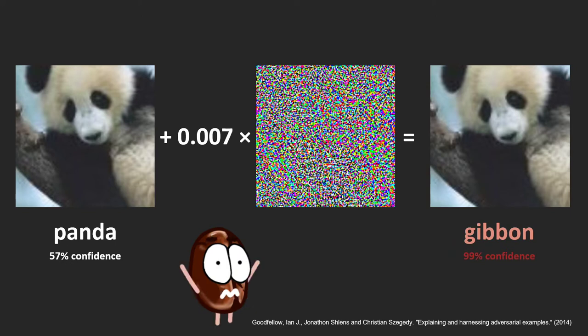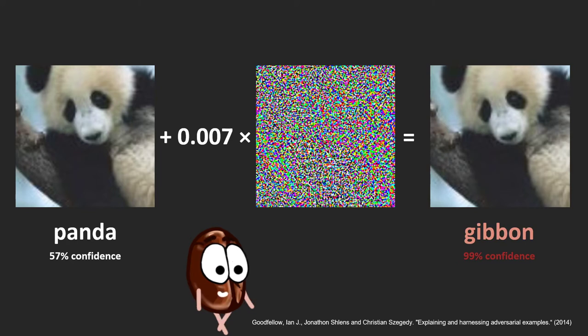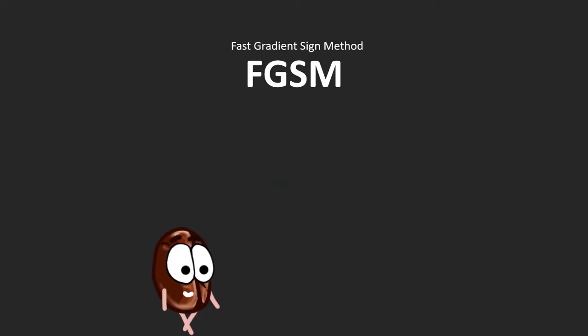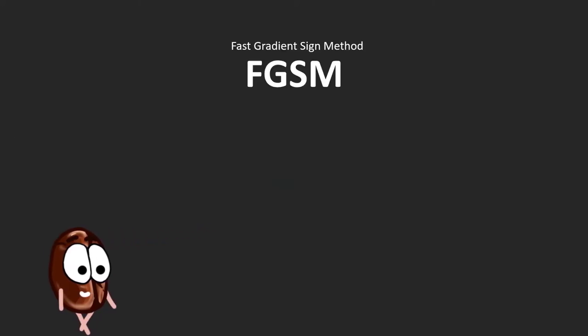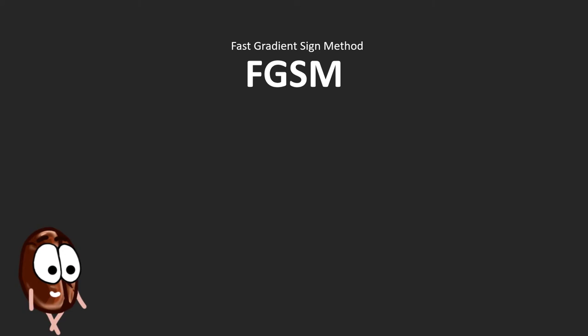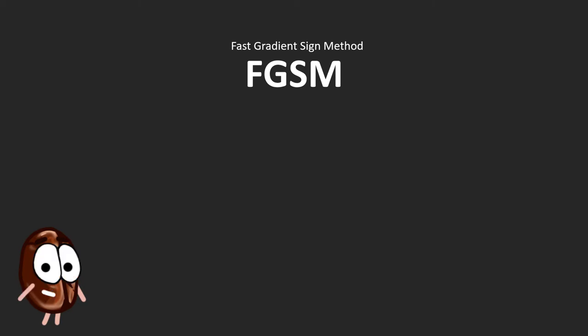How could this happen? This is an example of an adversarial noise attack. The algorithm behind this noise attack is fairly simple, even though the name sounds very intimidating: fast gradient sign method. Here we explain it briefly. Remember, we train neural networks by stochastic gradient descent, in short SGD, in the following way.